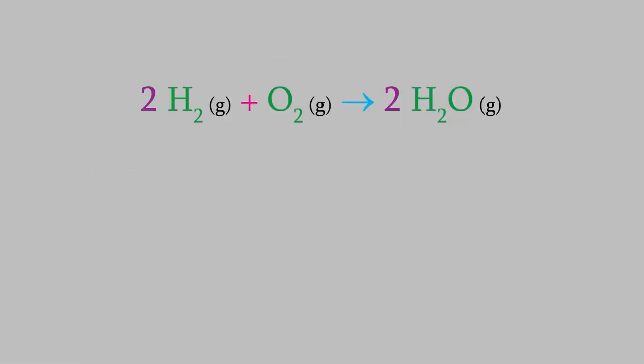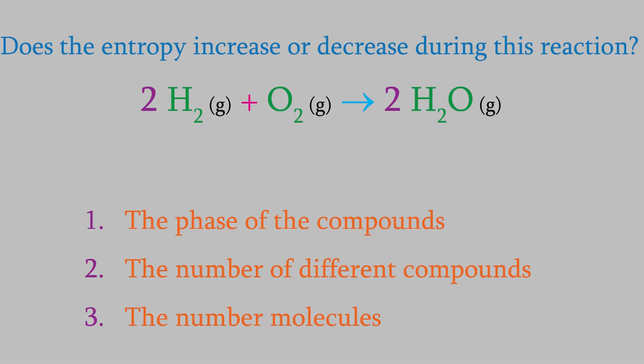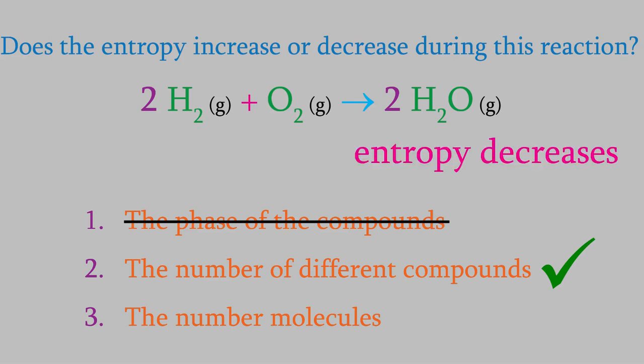Here's another example. In this reaction, will the entropy go up or down? In this case, the phase is the same for all of the molecules, so that won't affect the entropy. However, there are two different compounds on the reactant side and just one on the product side, so that'll make the entropy decrease. Also, we're going from a total of three molecules for the reactants to two for the products. That also will make the entropy decrease.